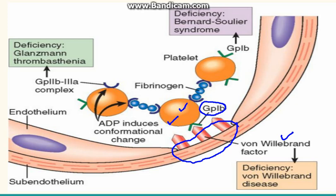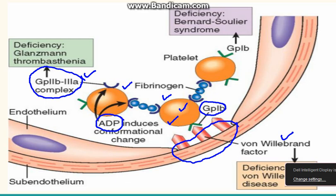The second step is secretion of various mediators from the platelet, such as calcium and ADP. Then the third step is aggregation, mediated by glycoprotein IIb and IIIa. Fibrinogen comes in between adjacent platelets, linking them together, and the entire structure is known as the primary hemostatic plug.